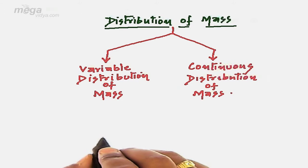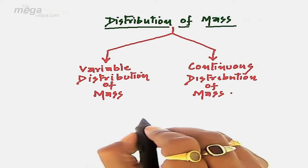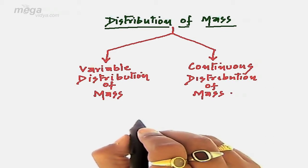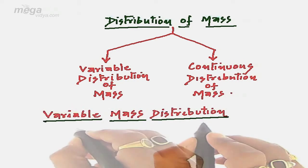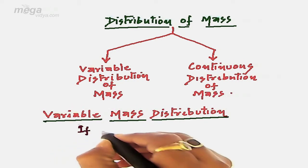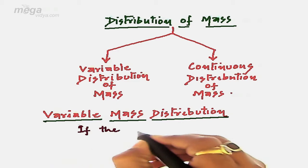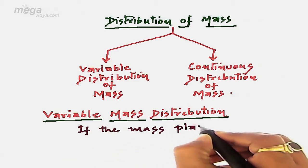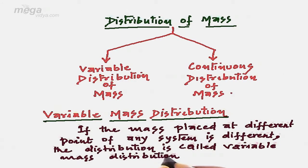Now firstly, let us explain what variable distribution of mass is and what is the value of moment of inertia for variable mass distribution. We can say if the mass at different points of any system is different, then the distribution is called variable mass distribution.